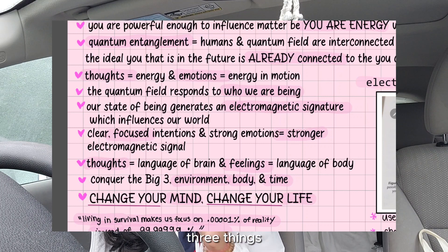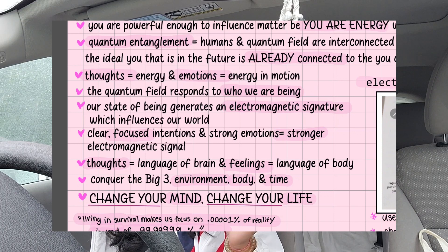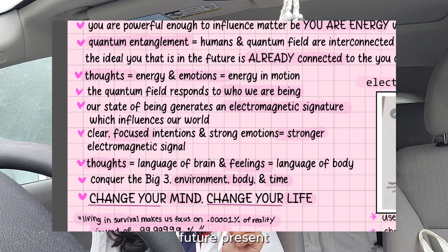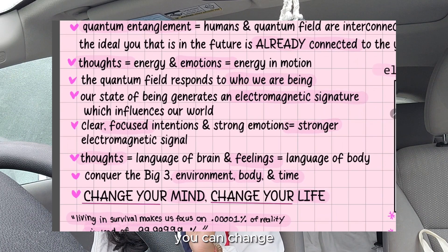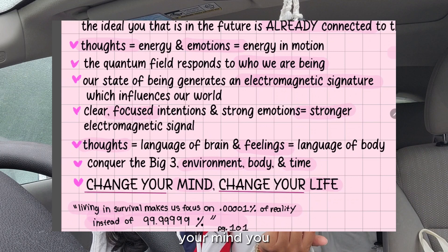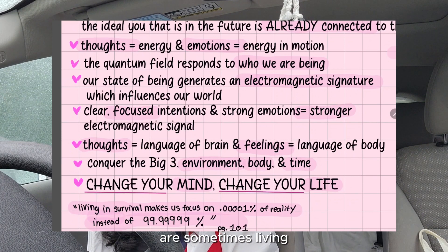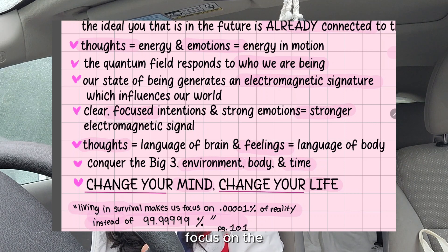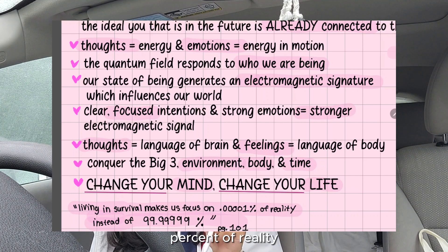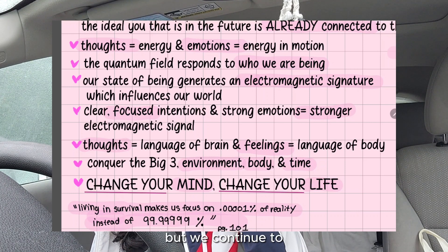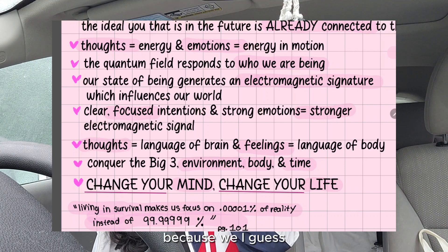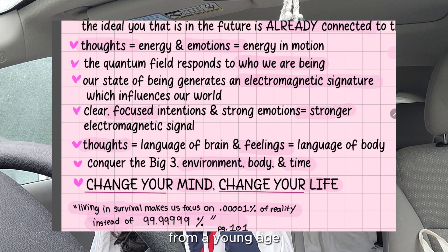If you can conquer three things — your environment, what's happening around you; your body, so your feelings; and your time, the way you view and experience time, what happened in the past, the future, the present, and whatever state you're living in right now in your mind — if you can conquer all three, you can change anything you want. Essentially, if you change your mind, you can change your life. Most of us are sometimes living in a survival state, which makes us focus on the 0.0001% of reality instead of the 99.9999% of reality that actually exists in front of us.